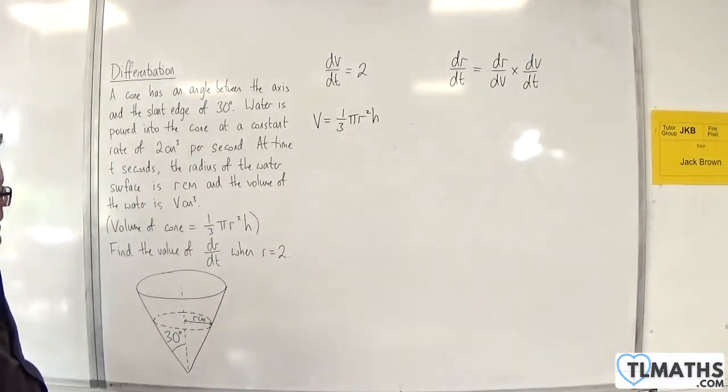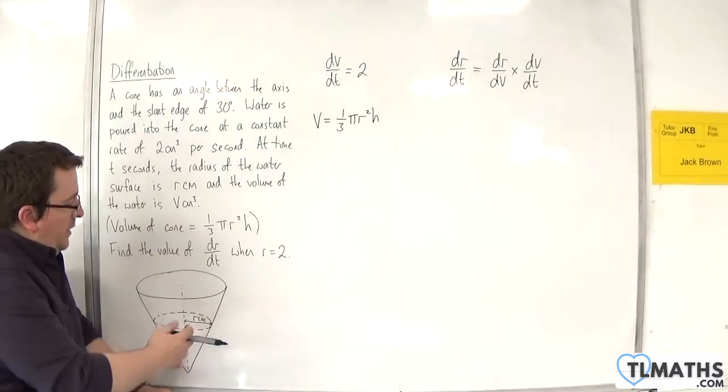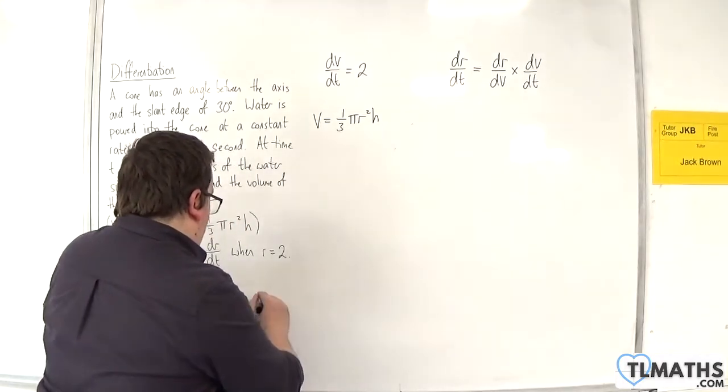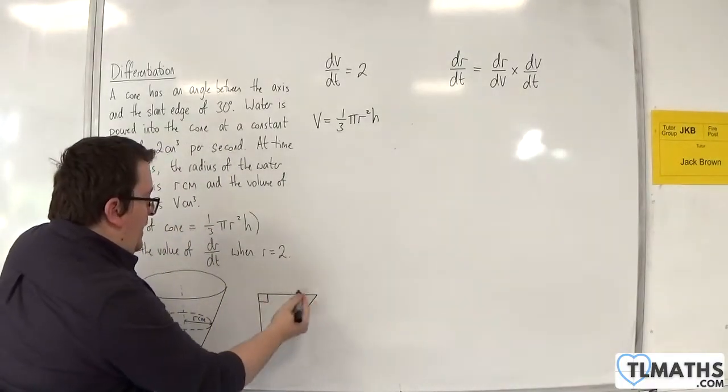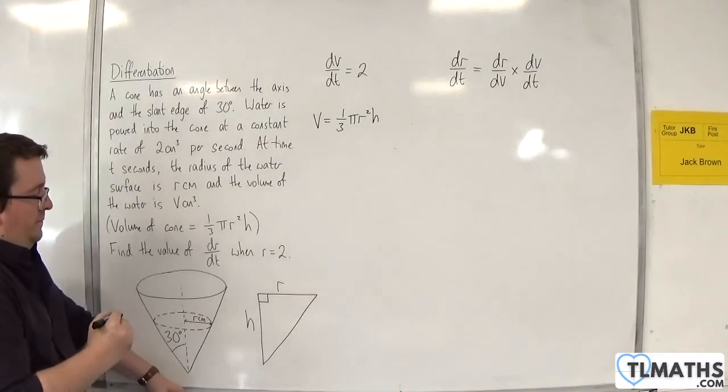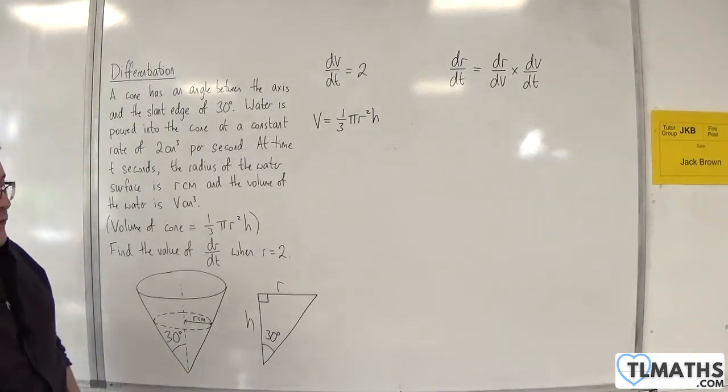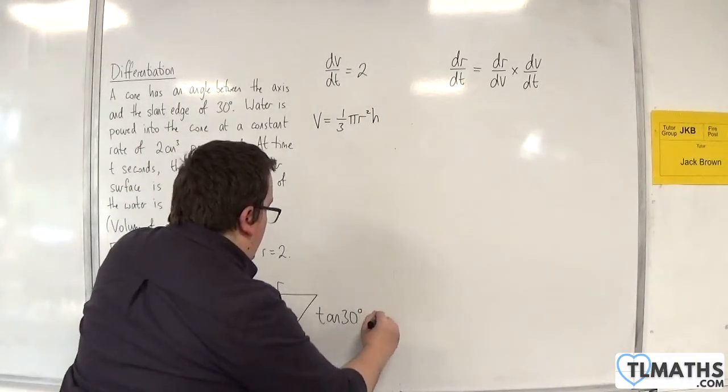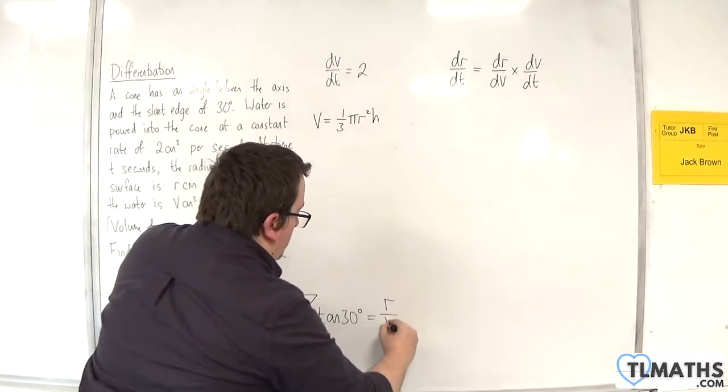In order to do that, I'm going to focus in on the cross section of the cone. Think of this as a right-angled triangle. Here is a right-angled triangle where this is the radius r centimeters and that's the height h. We know that that's going to be a 30 degree angle. Using basic trigonometry SOHCAHTOA, I can write that tan of the angle, so tan of 30 degrees, is equal to the opposite r over the adjacent h, so r over h.